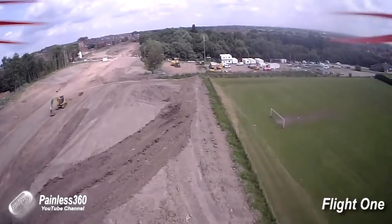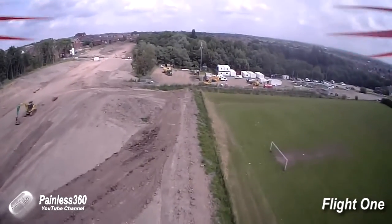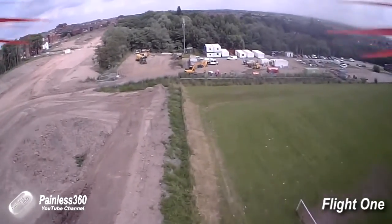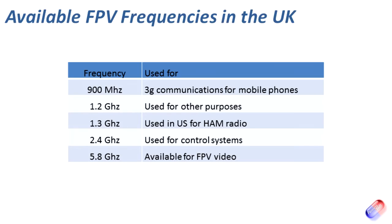So the first thing we'll talk about is the available FPV frequencies in the UK. These are the ones you'll tend to hear about on the forums: 900 megahertz to 5.8 gigahertz. The challenge we have here in the UK is that if we run through these top to bottom, only one is really available for us to use as a digital video transmission.